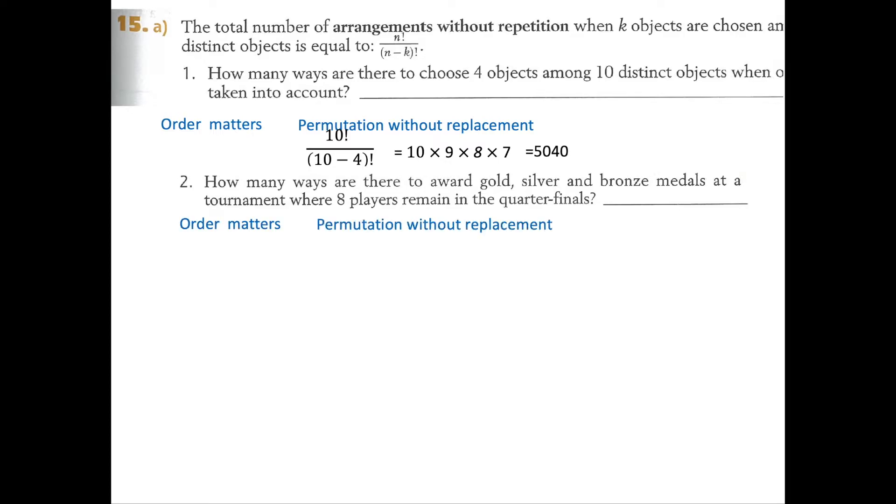The order matters. This is a permutation without replacement, so we're going to do 8 factorial divided by 8 minus 3 factorial, which is 8 factorial divided by 5 factorial. So 8 times 7 times 6, and that gives us 336. So that's 336 ways that we could award the gold, silver, and bronze.